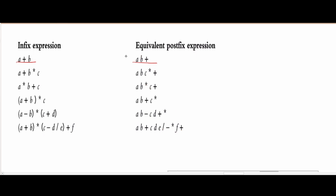Looking at these problems, we can convert them. For A plus B, we know that we have this operand, so we're just going to write it out — we have A. Then we have this plus, so it's going to go into our stack. Next we have the operand B, so we're going to have A, B. Then we're going to have the plus. The reason why is because now we are at the end of our expression, and since we are at the end, we are just going to pop everything off of our list.